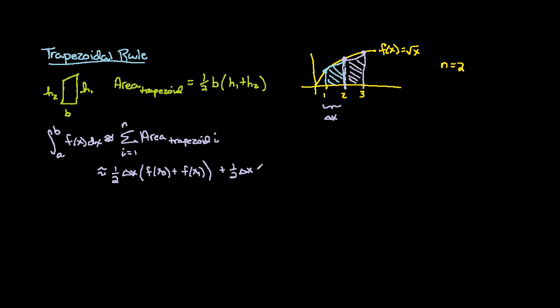So that would be 1 half delta x times f of x sub 1 plus f of x sub 2 and so forth. And we'll keep doing this. We'll add up all of these areas until we get to the last trapezoid or the nth trapezoid. So this would be f of x sub n minus 1 plus f of x sub n.